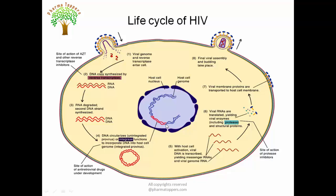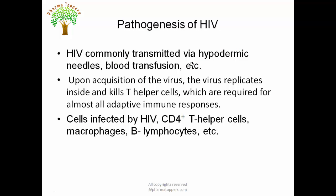This double-stranded DNA is circularized and then integrates with the host cell DNA. The host cell DNA is transcribed, yielding messenger RNAs and viral genome RNA. The viral genome RNA is translated, yielding various viral enzymes. With the help of protease, different viral structural proteins are synthesized, transported to the cell membrane, assembled, and finally the virus is budded off. This is how infection is established.